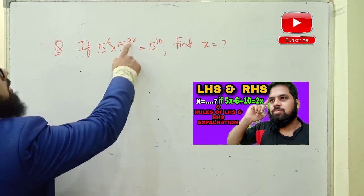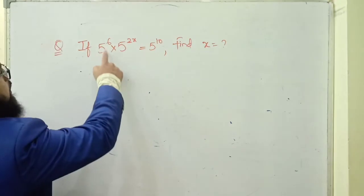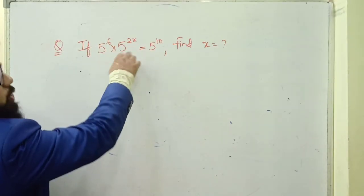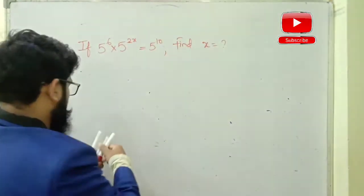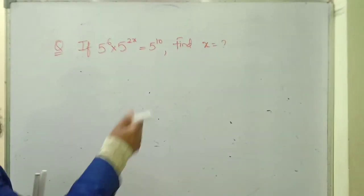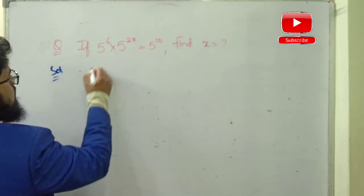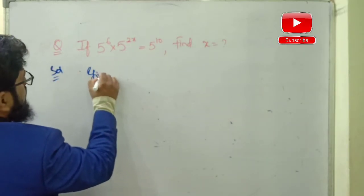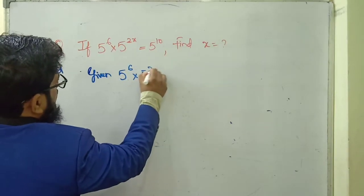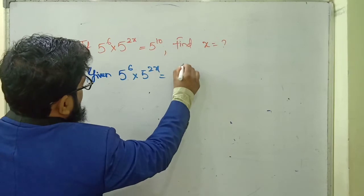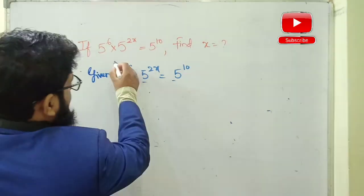5^6 into 5^(2x) is equal to 5^10 — find x, what is the value of x? So how to solve this type of sum: first of all, write down the given expression: 5^6 into 5^(2x) is equal to 5^10. Here you can observe the bases are same.